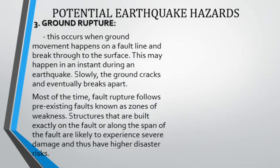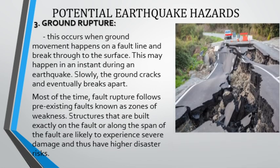The third potential hazard during an earthquake is ground rupture. This occurs when ground movement happens on a fault line and breaks through to the surface. Most of the time, fault rupture follows pre-existing faults known as zones of weakness. Thus, structures built exactly on or near a fault line are more highly vulnerable and exposed to severe damage, and have higher disaster risks.